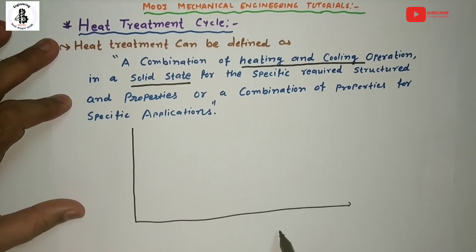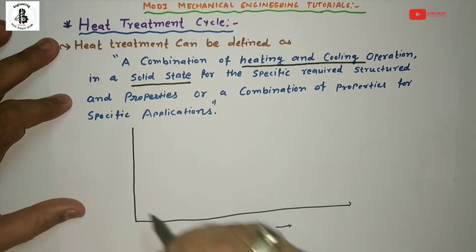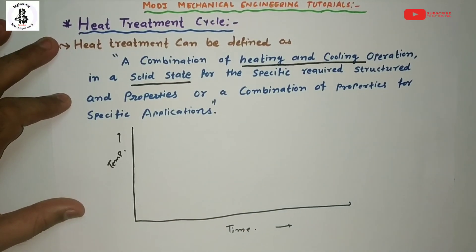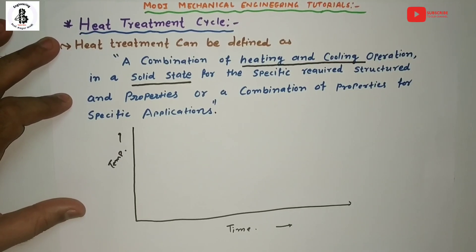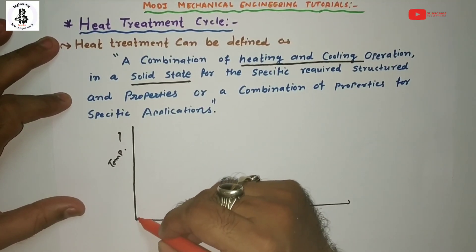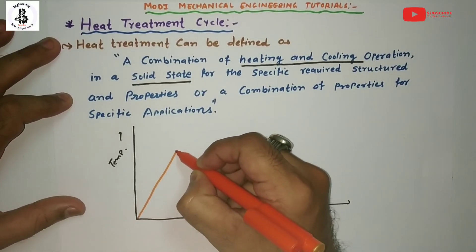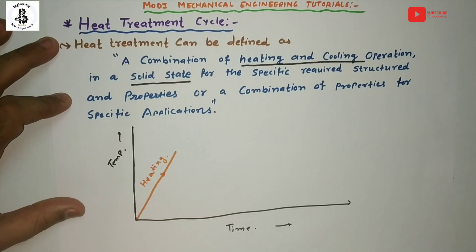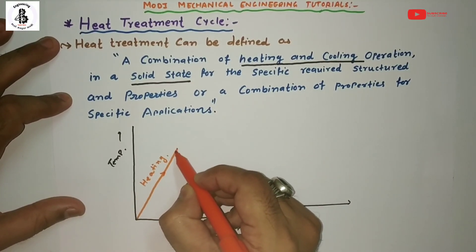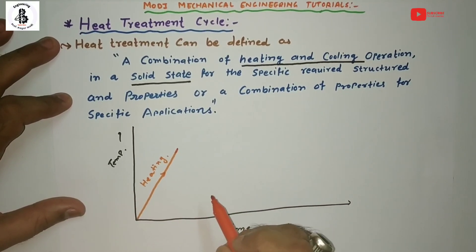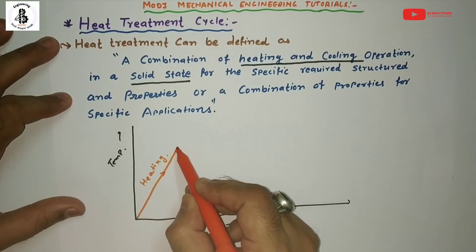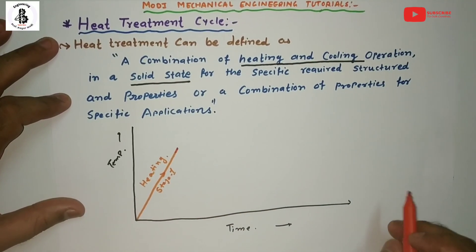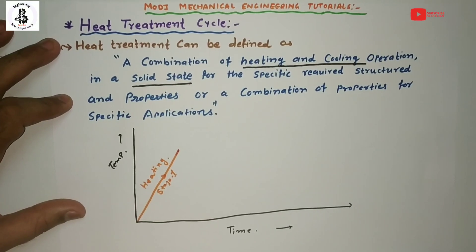On this graph, the x-axis represents time and the y-axis represents temperature. The first stage is the heating of the metals or alloys, carried out at a specific temperature range that is pre-defined according to the weight percentage of carbon, or the composition. This is stage number one.